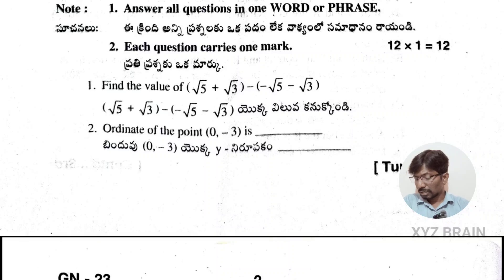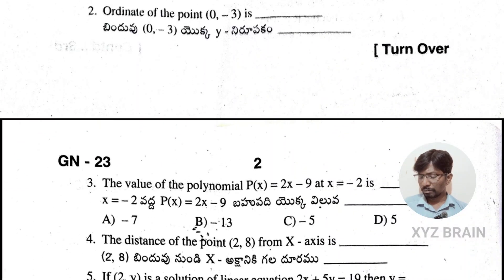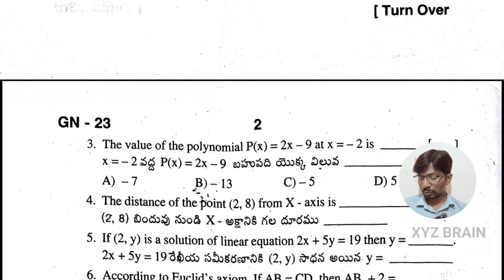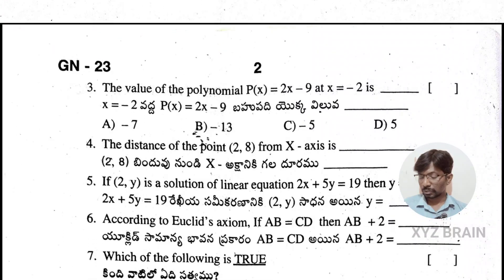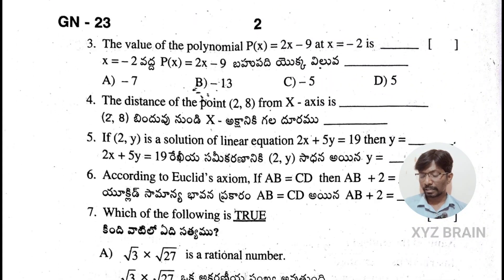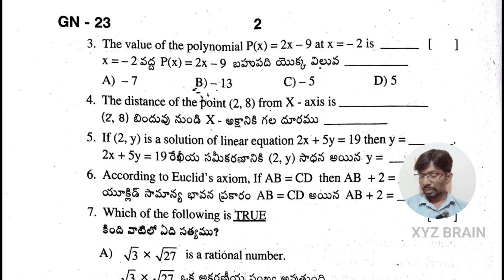First one and second one: are the points (0, -3) on the graph? Third one: find the value of the polynomial p(x) = 2x - 9 at x = -1, 0. Fourth one: find the distance of the point (2, 8) from the x-axis. Fifth one: if (2, y) is a solution of the linear equation 2x + 5y = 19, then find y.